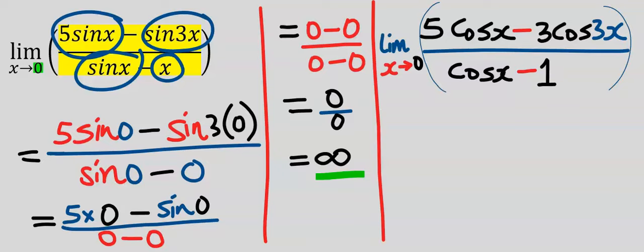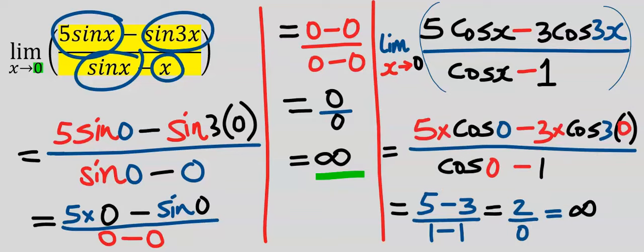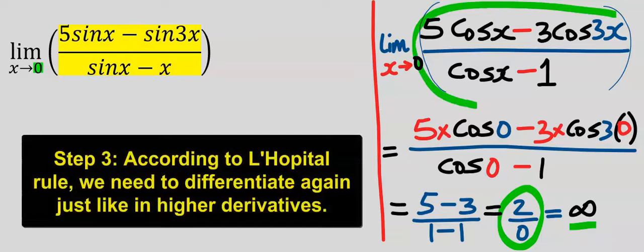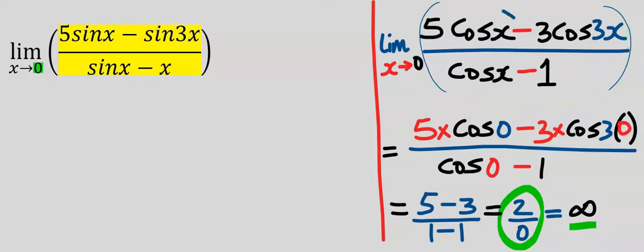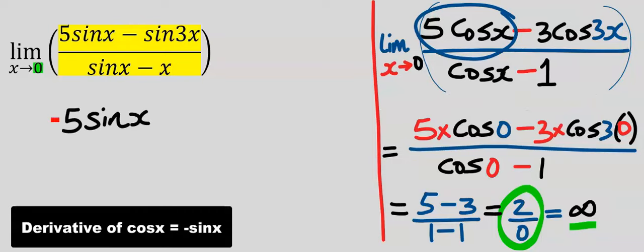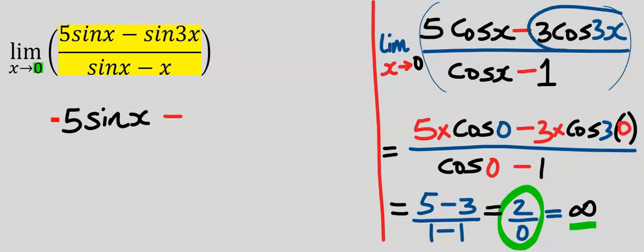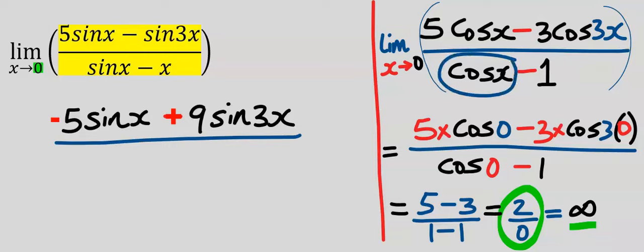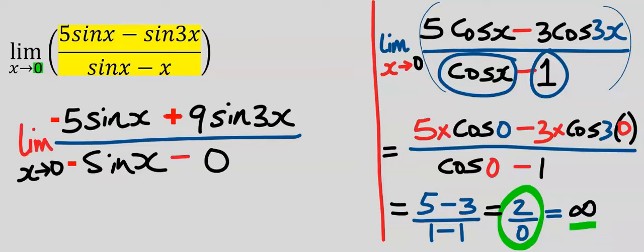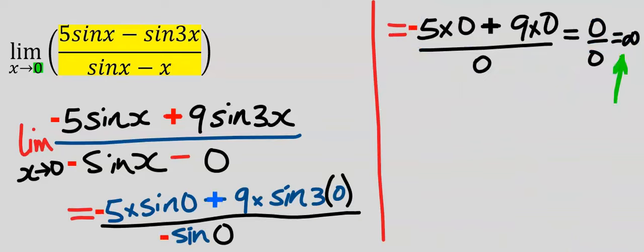Taking the limit as x tends to 0, cos 0 is 1, but anything divided by 0 is undefined. Step 3: we need to differentiate everything again. Differentiating 5 cos x gives 5 sin x. Differentiating 3 cos 3x gives 9 sin 3x. Differentiating cos x gives sin x, and differentiating 1 gives 0. Taking the limit again as x tends to 0, we get 0 over 0 again, which is undefined.